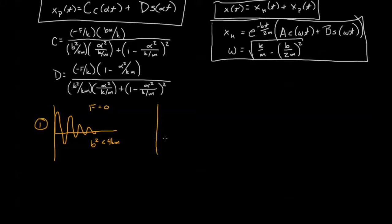Scenario two will be our overdamped situation. This once again, F equals zero, and B squared is greater than 4km, and in that case maybe we have something that looks like this. We'll call that scenario two.